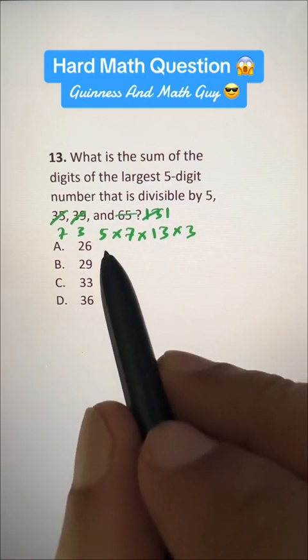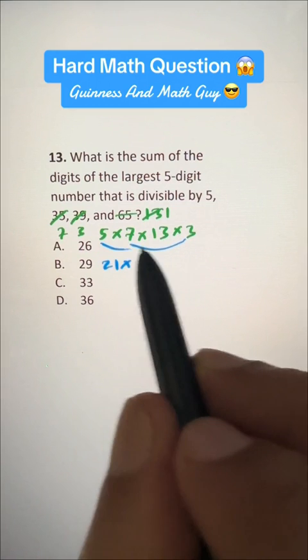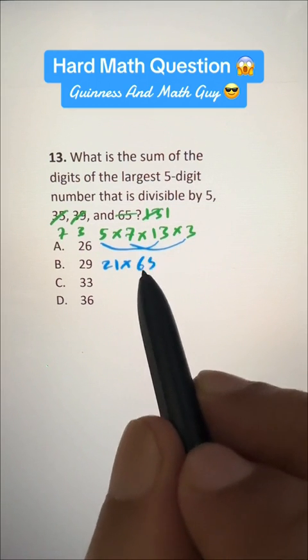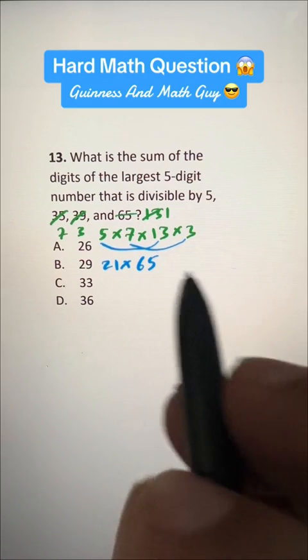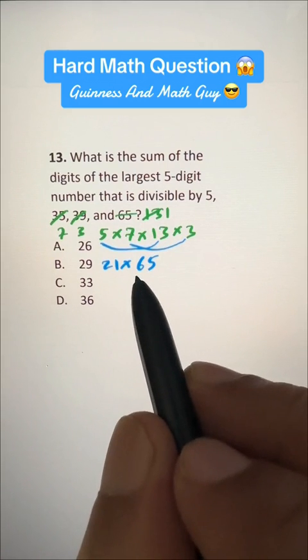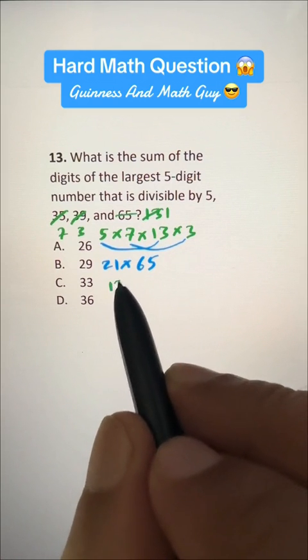Now we can do 7 times 3 is 21. 5 times 13 is 65, as we already know here. And here 2 times 65 is 130,